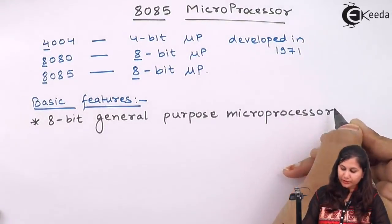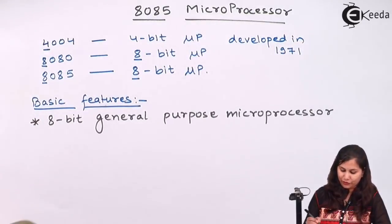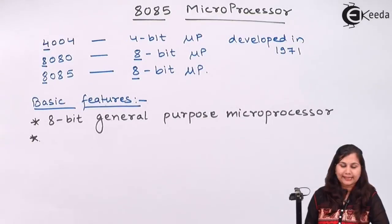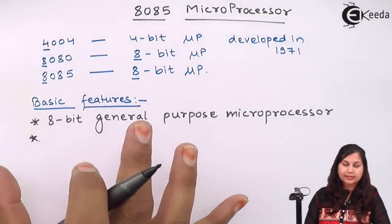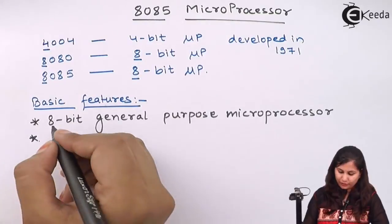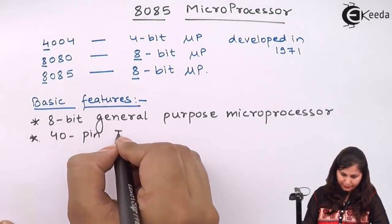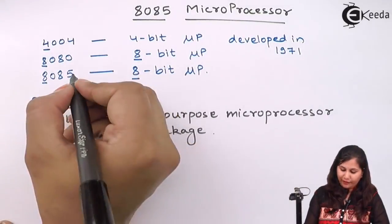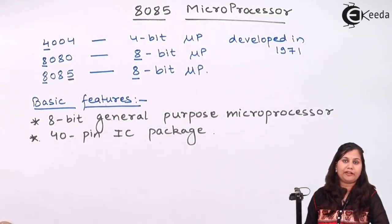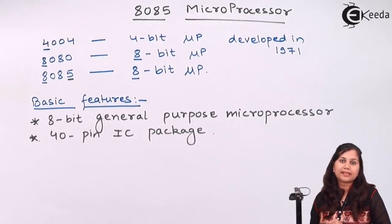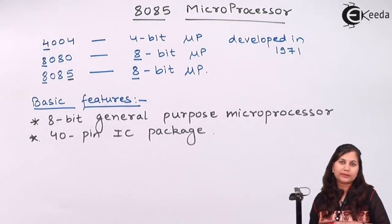It is a general purpose microprocessor, so it can be used in any type of application. It comes in a 40-pin IC package. This 5 in the 8085 shows that it is using a plus 5-volt power supply.